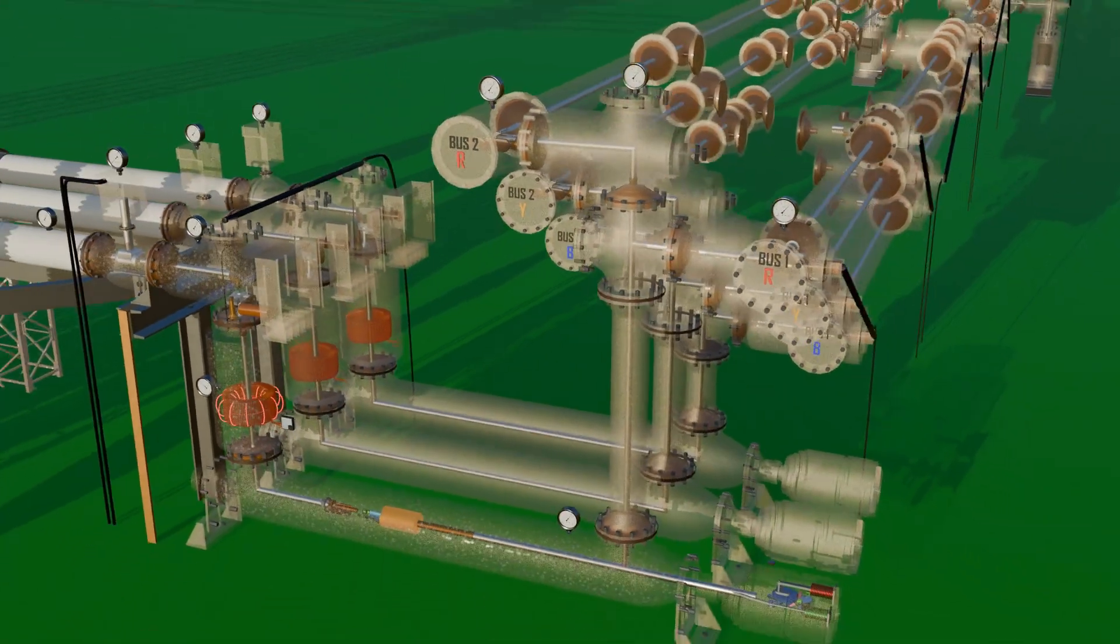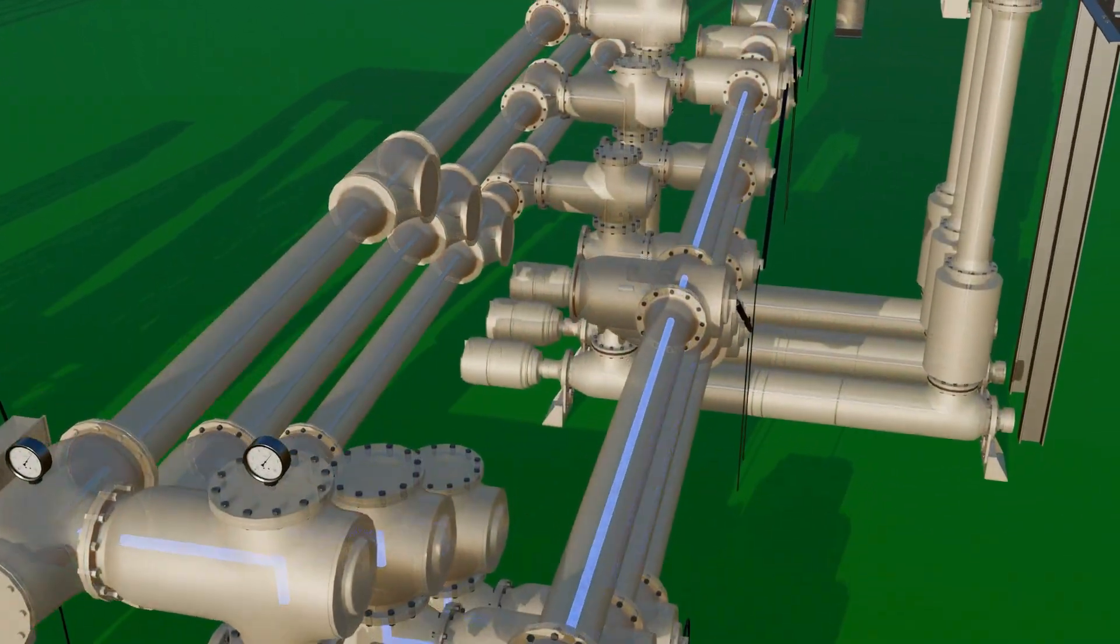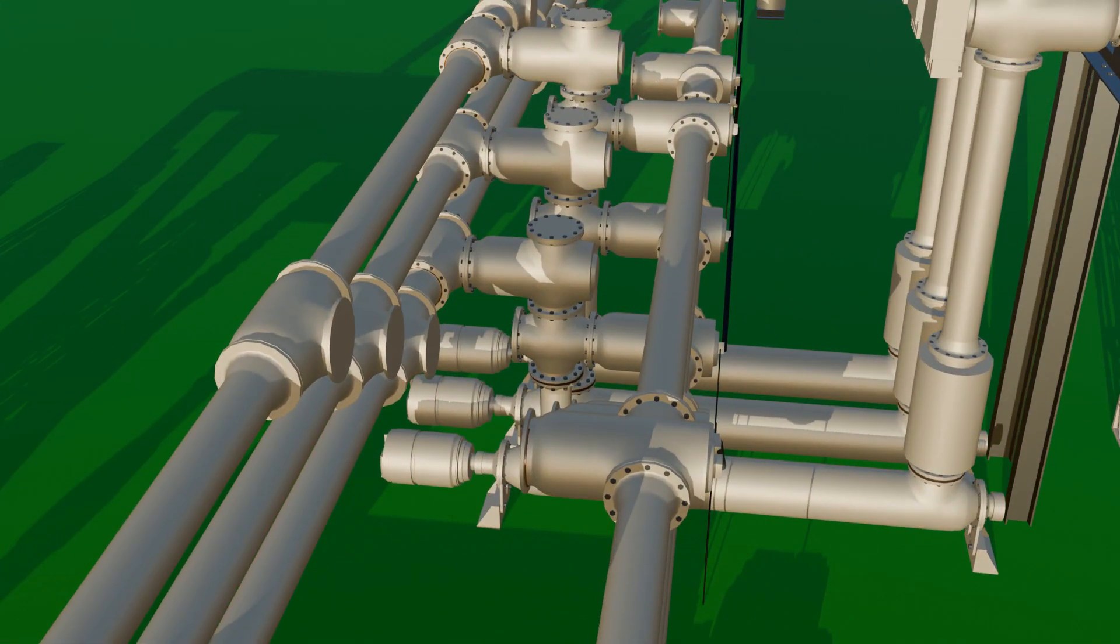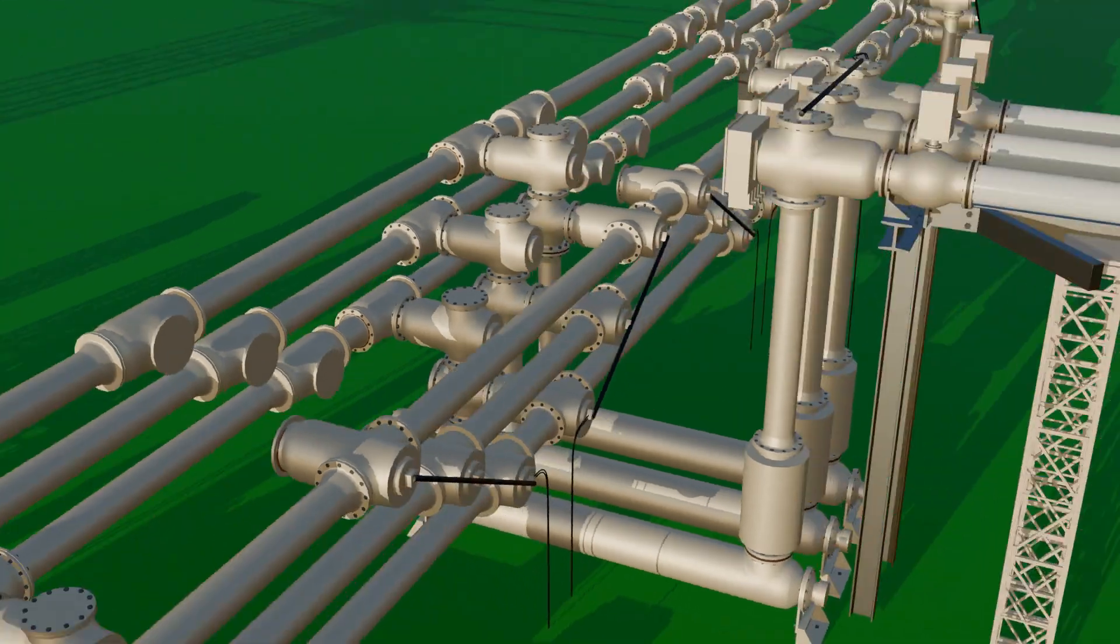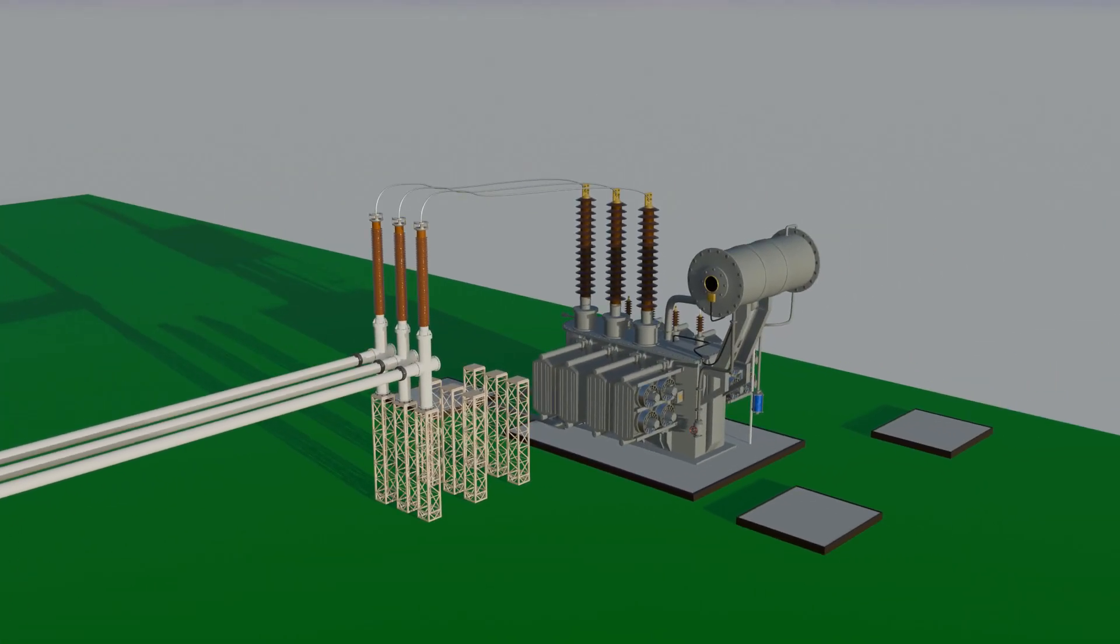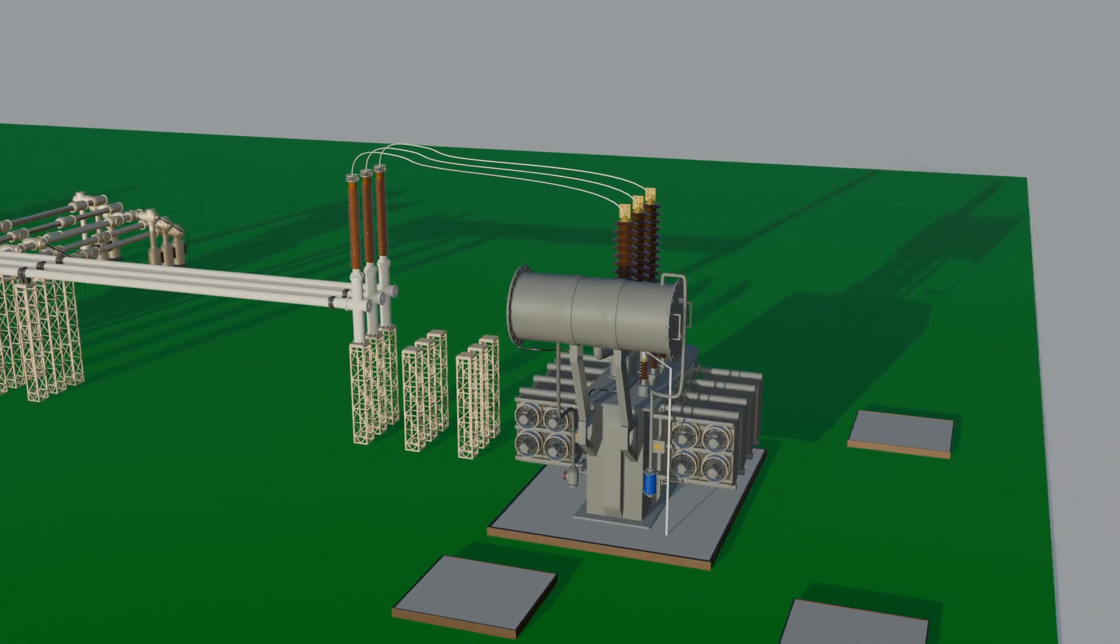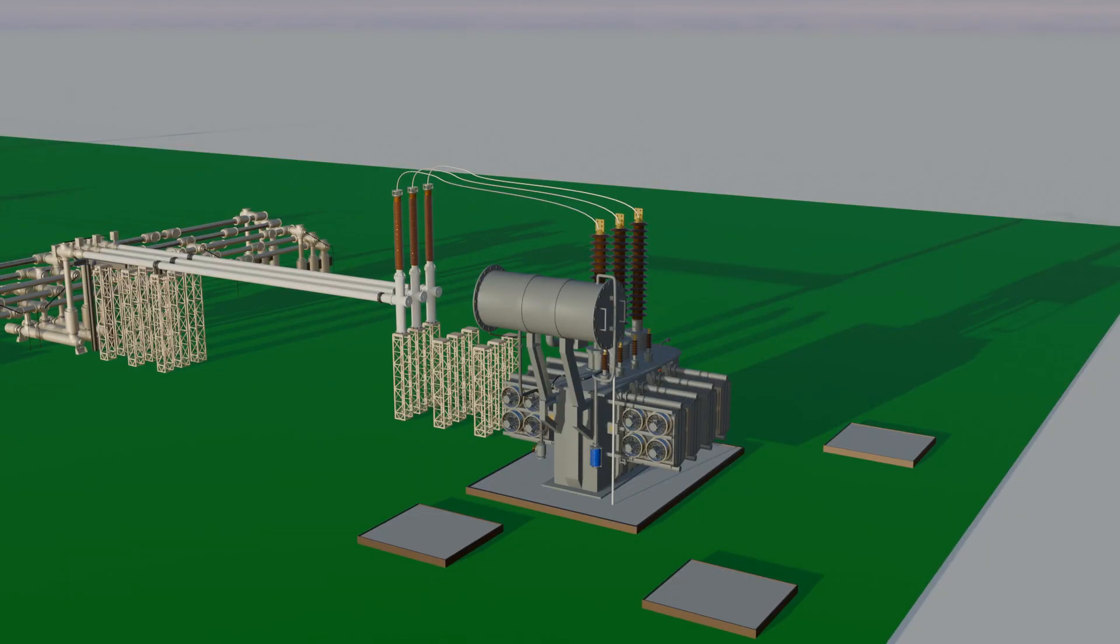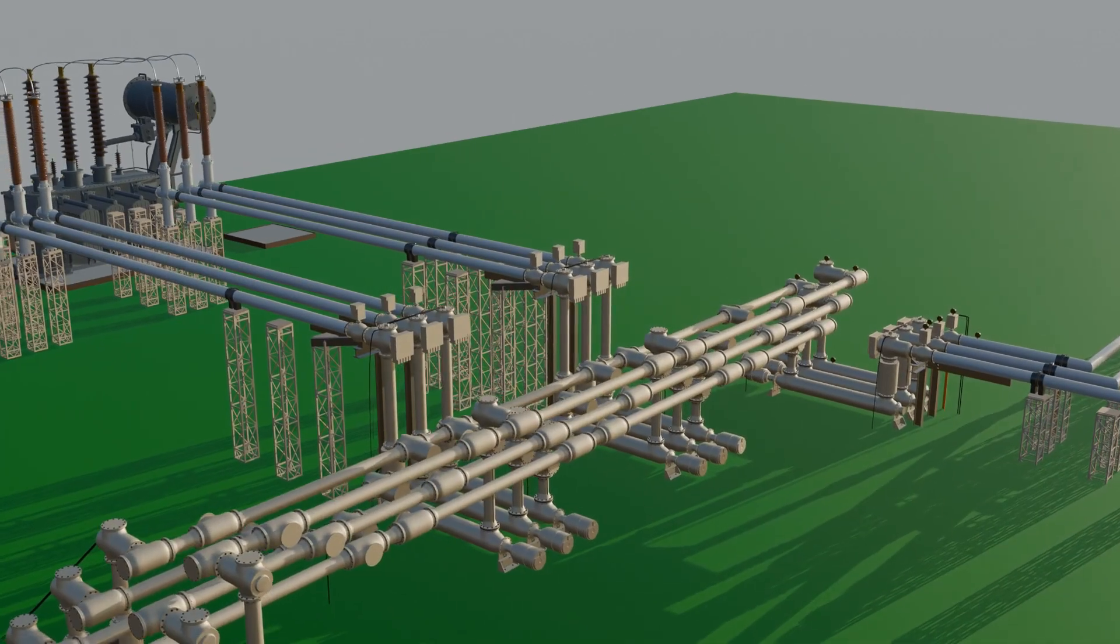For now, let's assume the main bus 1 is in operation. From the bus, multiple feeders are taken out. Each feeder has the following sequence per phase: isolator to current transformer to circuit breaker to isolator. From here, the feeder reaches the power transformer, which steps the voltage down from 440 kV to the required 220 kV or 132 kV. Similarly, multiple transformers can be connected to multiple feeders from the bus, allowing power to be transmitted to different regions.